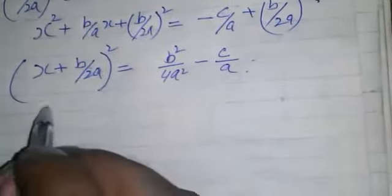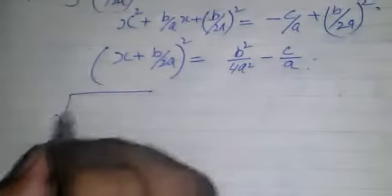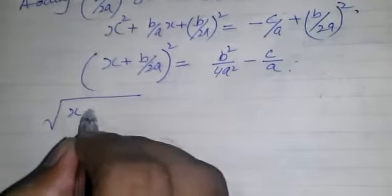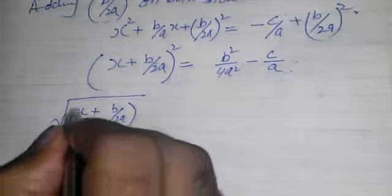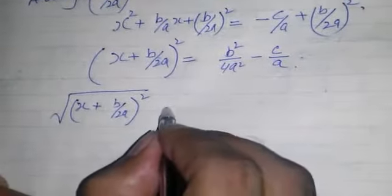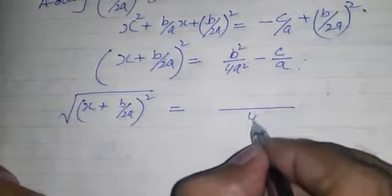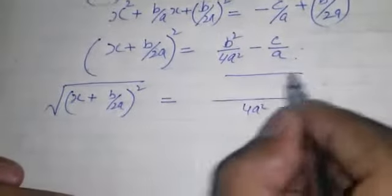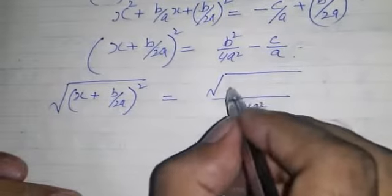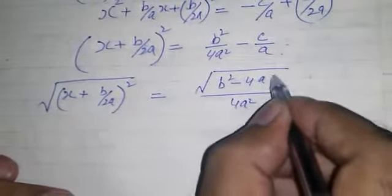Now we take square root on both sides. This is (x + B/2A)² = (B² - 4AC) / 4A².